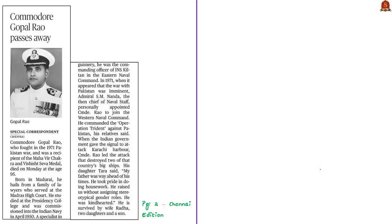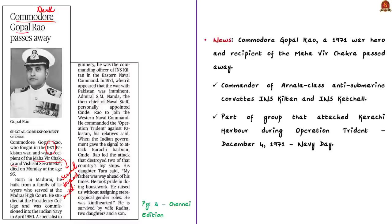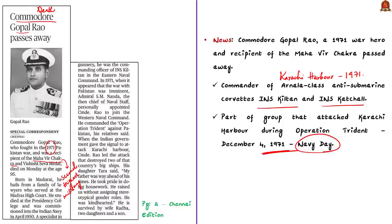The next news article reports the death of Commodore Gopal Rao, a 1971 war hero and recipient of the Maha Vir Chakra — India's second highest military decoration. He was the commander of two Arnala class anti-submarine corvettes, INS Kiltan and INS Kachal, which were part of the task group that attacked Karachi harbor during Operation Trident on December 4, 1971. That date, December 4, is now marked as Navy Day.